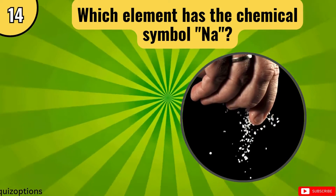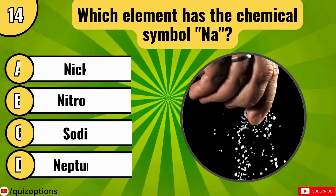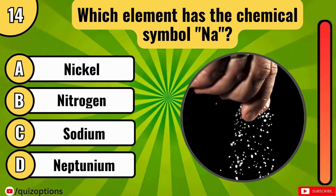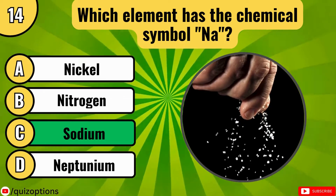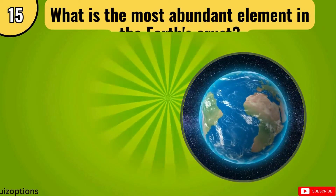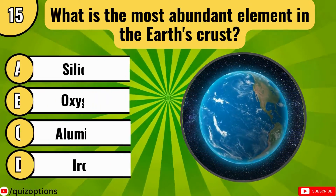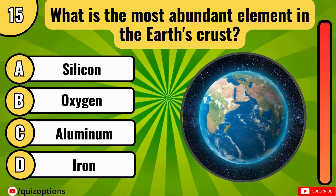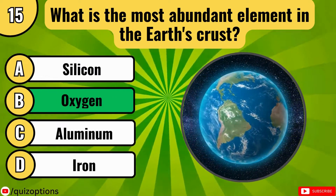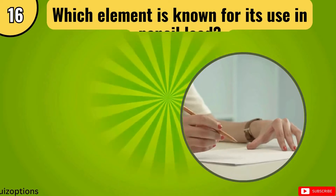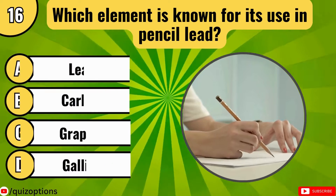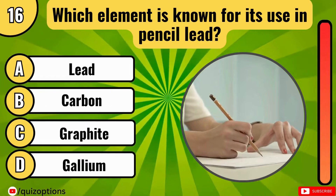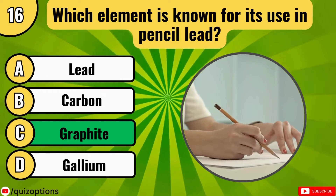Which element has the chemical symbol Na? What is the most abundant element in the Earth's crust? Which element is known for its use in pencil lead? Option C. Graphite.